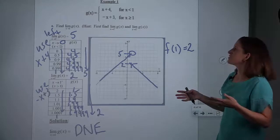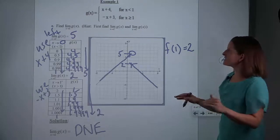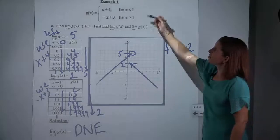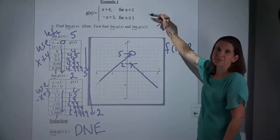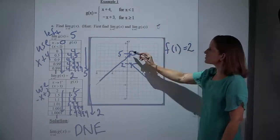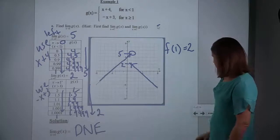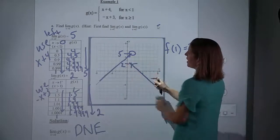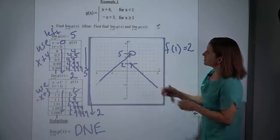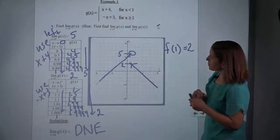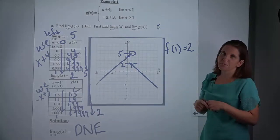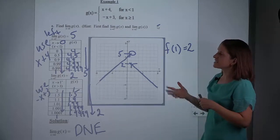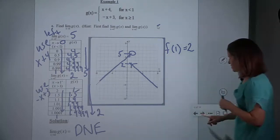What's the difference? Well, at a very basic level, there was clearly something weird happening at 1. It was our changing point of which function we used, and visually there was clearly a jump there. Whereas at x equals 4, if I zoom in and just look right around that point, it's just a normal looking part of the graph. And so it makes sense that the limit value and the function value matched up there.